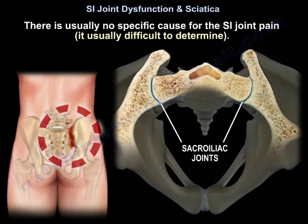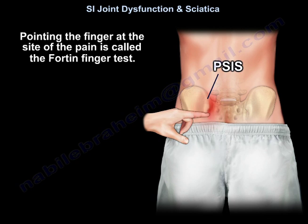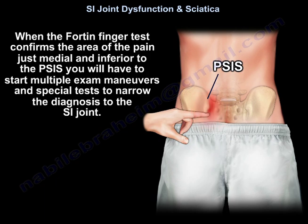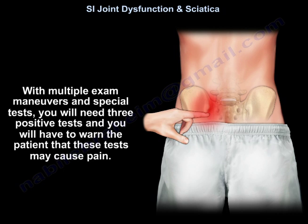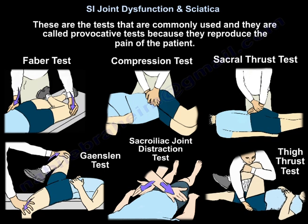Usually there is no specific cause for the sacroiliac joint pain — the cause is usually difficult to determine. Pointing the finger at the site of the pain is called the Fortin finger test. When the Fortin finger test confirms the area of the pain just medial and inferior to the posterior superior iliac spine, you will have to start multiple exam maneuvers and special tests to narrow the diagnosis to the sacroiliac joint. These are called provocative tests because they reproduce the patient's pain.